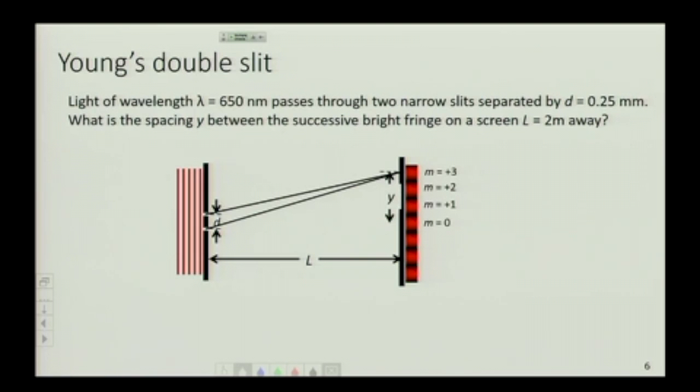So m equals 0, m equals 1, m equals 2, m equals 3. What is the difference between this and then this and then this? On this image, they look equal. Is that indeed the case?